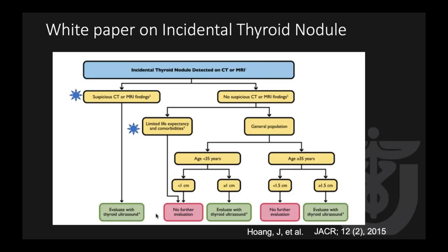This is a wonderful white paper by Dr. Jenny Wong on incidental thyroid nodules. Many people know the cut-offs of 35 years and 1 cm, or 1.5 cm over age 35. The important point of this guidance is: when you have suspicious CT or MRI findings, go straight to ultrasound evaluation regardless of size or age. But if the patient has a limited life expectancy or co-morbidity like end-stage renal disease or heart failure, you really don't need to work up an incidental thyroid nodule.